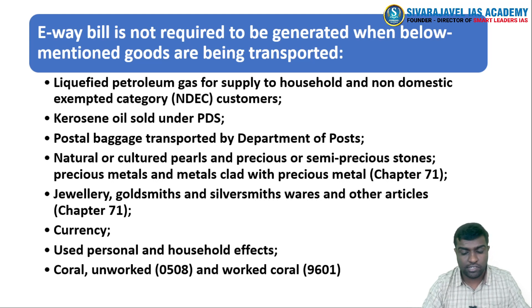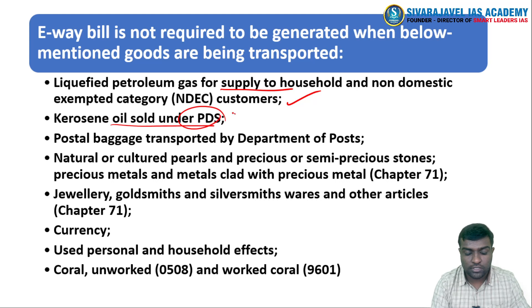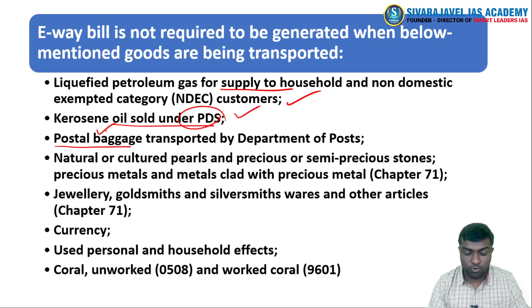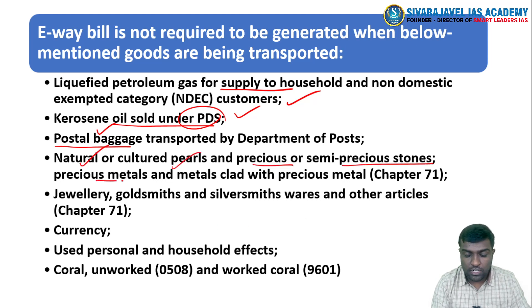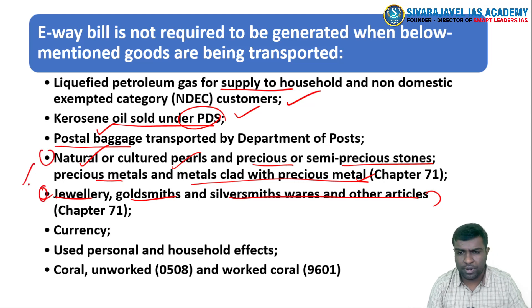The e-waybill is exempted for certain criteria. Where are they exempted? The supply of LPG to customers, kerosene sold under PDS, postal baggage transported by the Department of Posts, natural and cultural articles, precious items and precious metals, jewelry, and goldsmith and silversmith wares are all exempted. So, e-waybill is of course exempted for jewelry and gold.